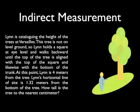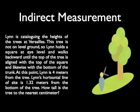So Lynn is going to hold a square measure up at eye level. And she is going to align it so the top of the tree and the bottom of the tree align with the legs. And then she is going to look straight across at the tree, just like we described before. Now when doing this, she has found that she is four meters from the tree and that the distance from the base of the tree to where she sees is 1.32 meters. So how tall is the tree to the nearest centimeter?